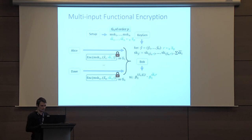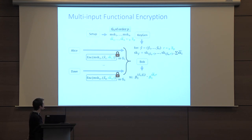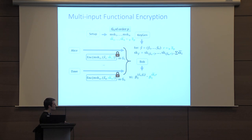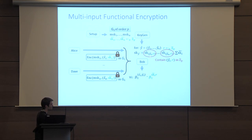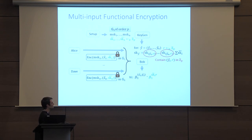The problem is that functional encryption ensures the underlying vector of the ciphertext is hidden, but the secret key doesn't have to hide its underlying vector. In the case of Agrawal-Libersele, the secret key contains the underlying vector in the clear — so all of the yi concatenated with r are leaked in the secret key. This is a problem if we want to use DDH, because we cannot reveal r in the clear. So we have to modify the scheme slightly.